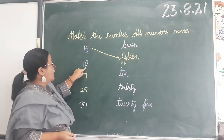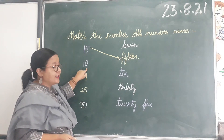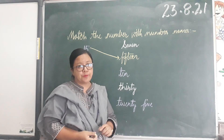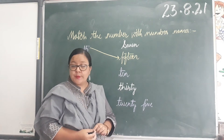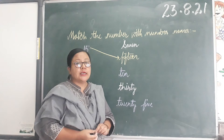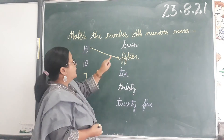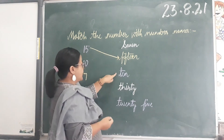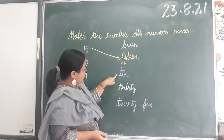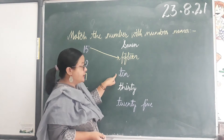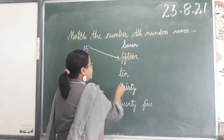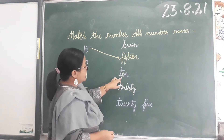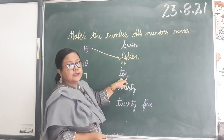Now what number is this? One zero, ten. Can you spell ten? Yes - T, E, N - ten. Is this ten? No. Is this ten? Yes. Let's spell it together - T, E, N - ten.